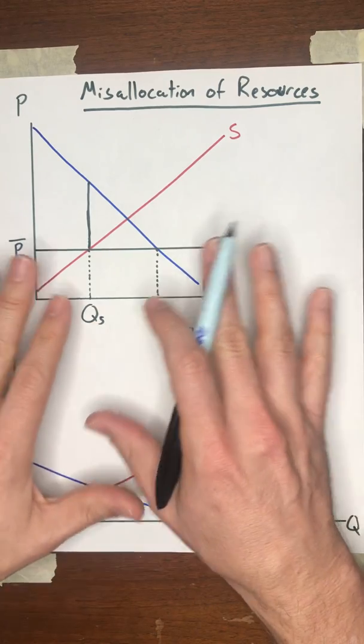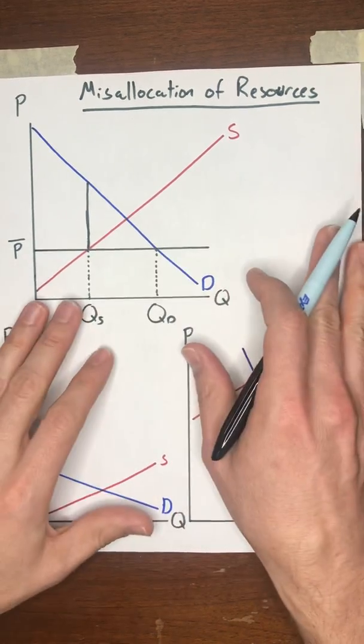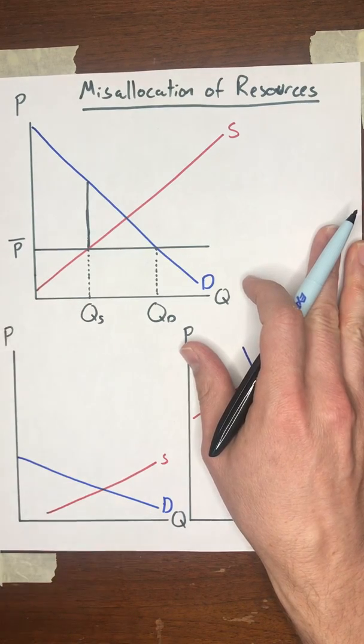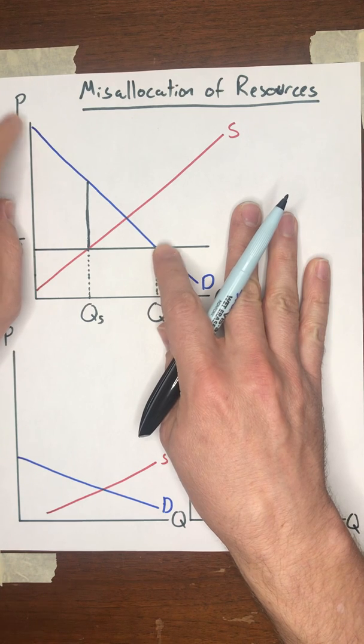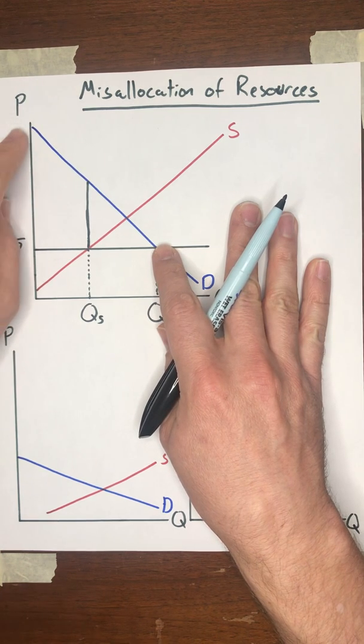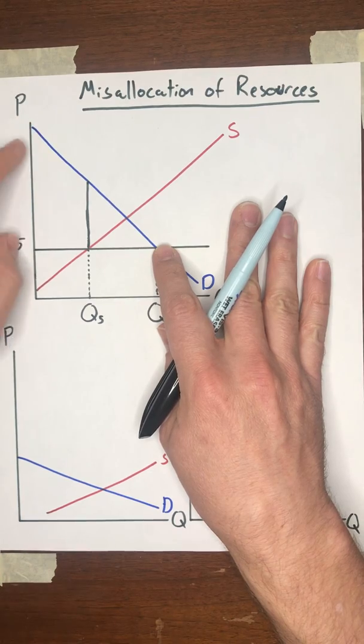So let's think about the loss of consumer surplus under this kind of random allocation of resources. They talk about this in one of the videos. Tyler Cowen and Alex Tabarrok discussed this. So I'm going to go over this, not in a lot of detail, but here's the basic idea.